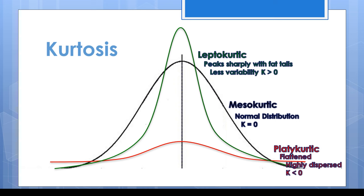If a distribution is skewed, there is no need to calculate kurtosis since the distribution is already not normal.